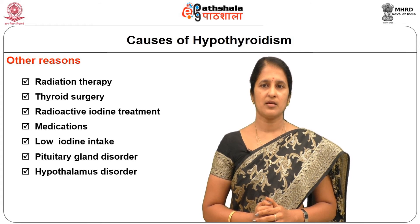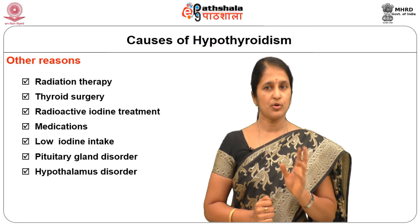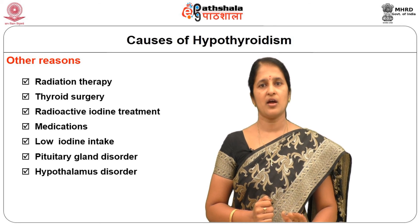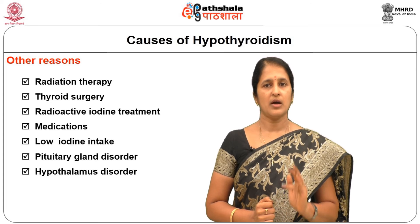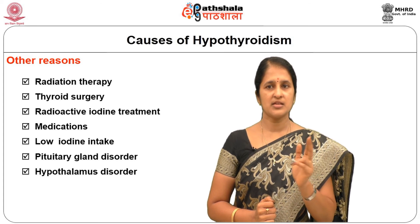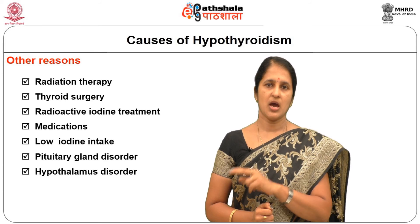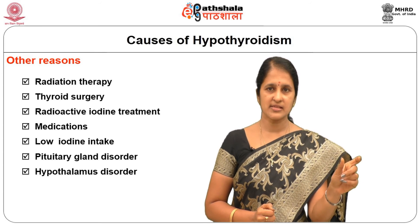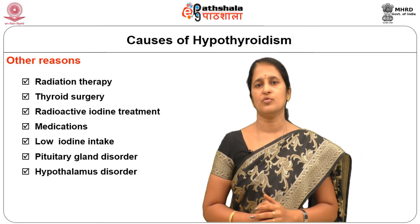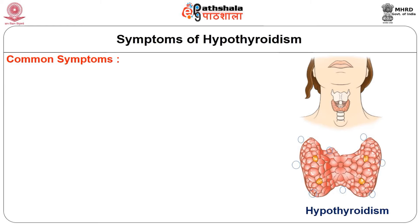Hypothalamus disorder is extremely rare, where the hypothalamus produces less thyrotrophin releasing hormone, which is essential to produce TSH, and TSH is needed to produce thyroid hormones. Similar to hyperthyroidism, hypothyroidism also has many symptoms.